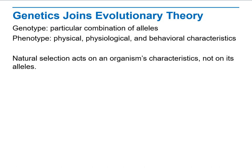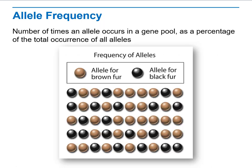Natural selection acts on an organism's characteristics, not on its alleles themselves. When we talk about alleles and chromosomes, we talk about two alleles coming from the two parents that come together to determine the final characteristic for the species.